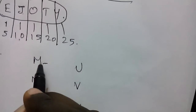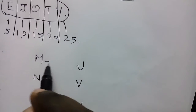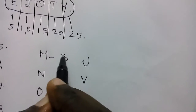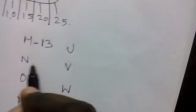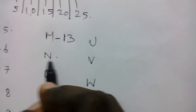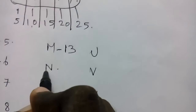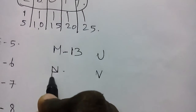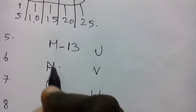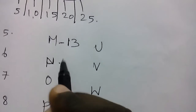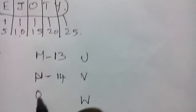For M: rotate M 90 degrees and it looks like a 3. After 12 comes 13, so add a 1 — M is 13. For N: add a line here and a line here so it looks like a 4. Since it's in reverse order, N is 14.